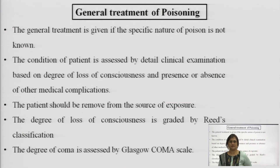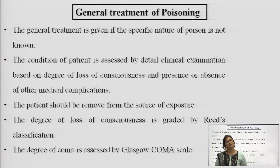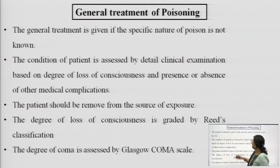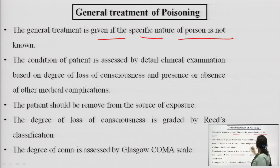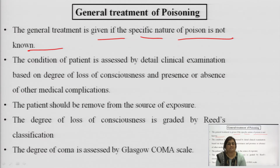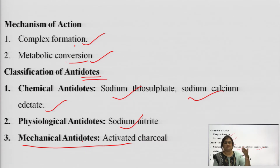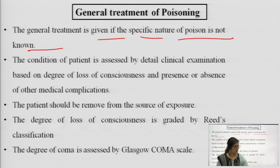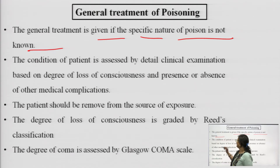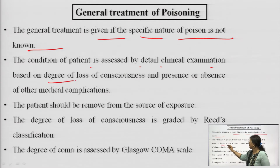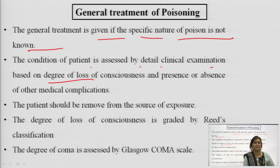Here in our slide, we shall look into general treatment for poisoning. The general treatment is given when the specific nature of the poison is not known. Unless we know the specific nature of the poison, we cannot determine which antidote to give. In such cases we go for general treatment of poisoning, where we have no idea about the type of poison taken.